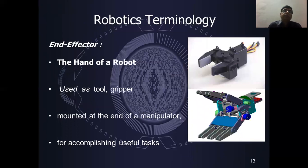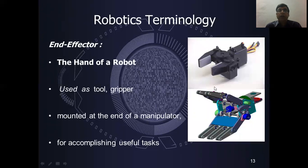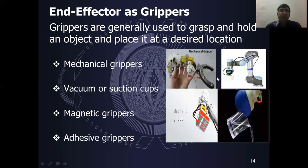The End Effector is also called the hand of the robot. It can be in the shape of a tool or a gripper. It is always mounted at the end of the manipulator. As a gripper, it grasps or holds an object and places it at a desired location. There are four types of grippers: mechanical, vacuum suction cup, magnetic grippers, and adhesive grippers.